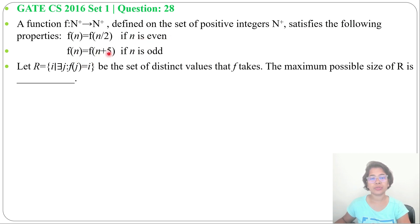f(n) = f(n+5) if n is odd. Let R = {i | ∃j, f(j) = i} be the set of distinct values that f takes. The maximum possible size of R is?